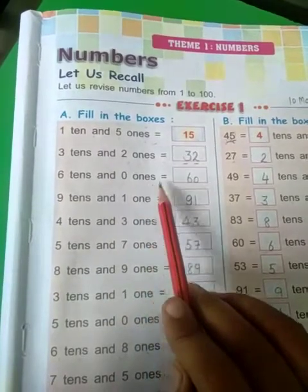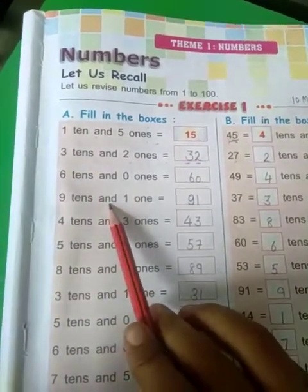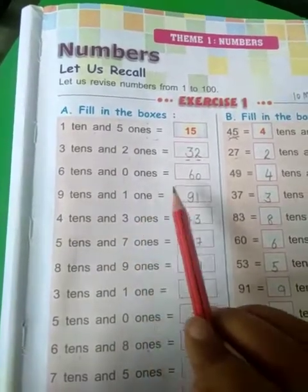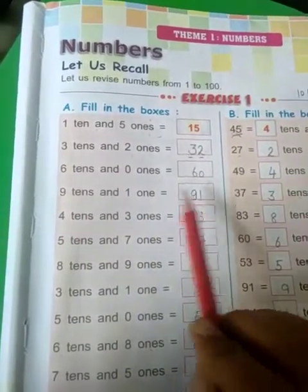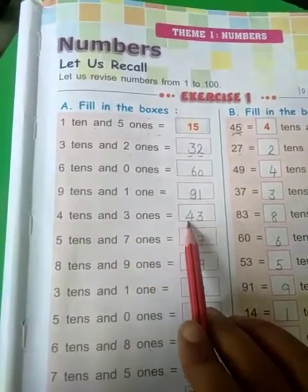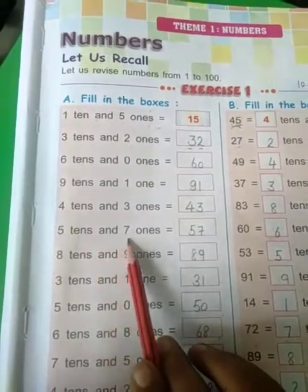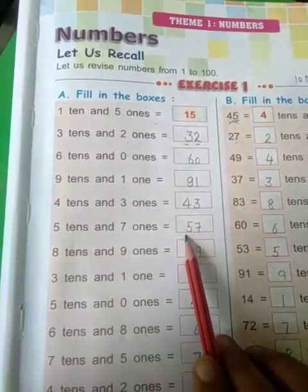6 tens and 0 ones is 60. 9 tens and 1 one is 91. 4 tens and 3 ones is 43. 5 tens and 7 ones is 57.